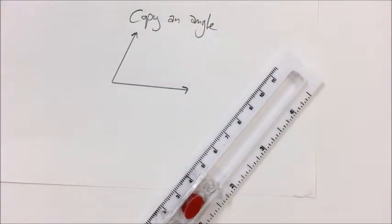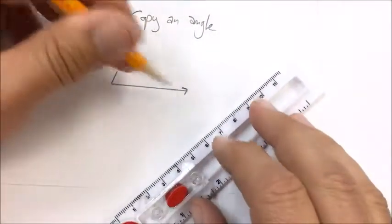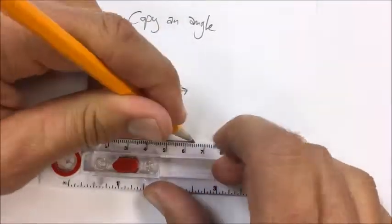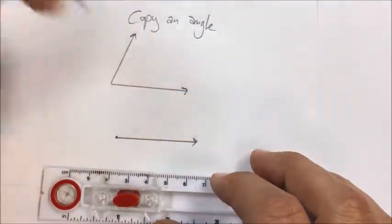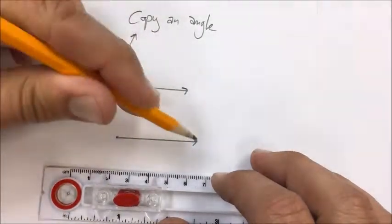So now I want to copy an angle. First thing I'm going to do is just make a line. Just have some nice straight line there. So this is that line.